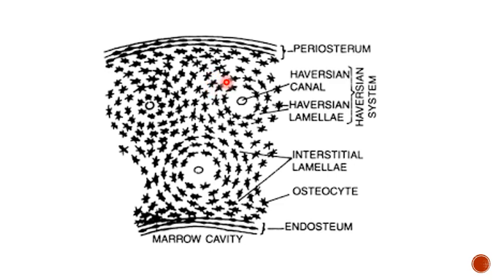In this image you can see the transverse section of the bone: the thick outermost layer is the periosteum, then the Haversian canal, and the bone cells — osteocytes — having protoplasmic processes called canaliculi, arranged in a concentric manner. The spaces where osteocytes are present are called lacunae or interstitial lamellae. The endosteum is on the inner side, the periosteum on the outer side, and the arrangement of osteocytes with lamellae and canaliculi forms the Haversian system.